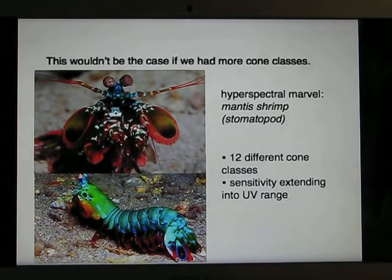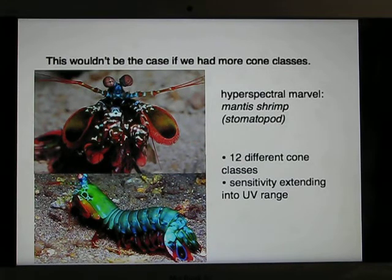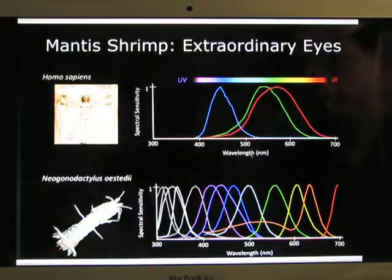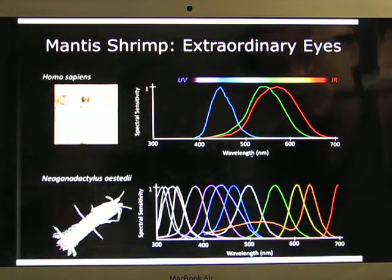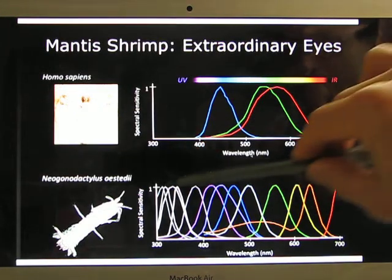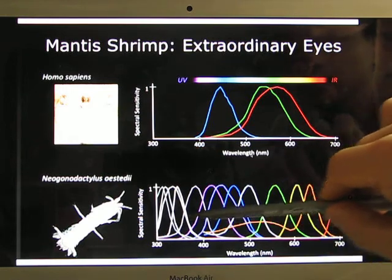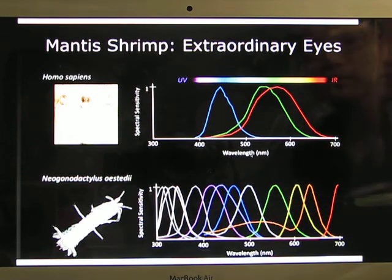The mantis shrimp has 12 different kinds of cones, so its world is very colorful. Humans have three kinds of cones, and the mantis shrimp has 12 — ranging from UV light all the way to infrared.